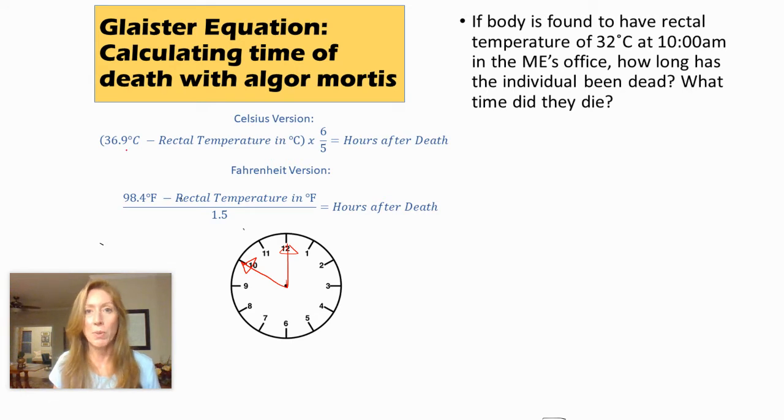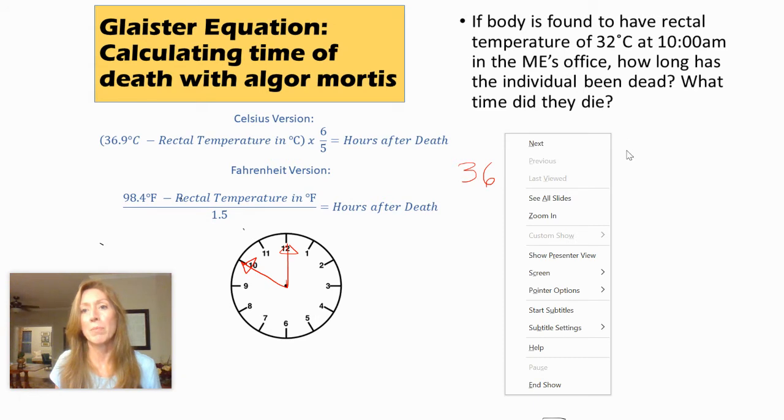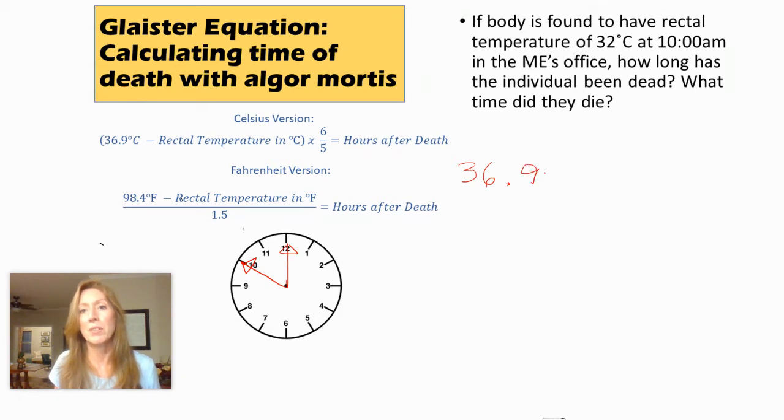Alright, so let's start with what we're given here. It says 36.9 degrees Celsius minus our measured temperature, which in this case is 32 degrees Celsius, and we're going to subtract that.